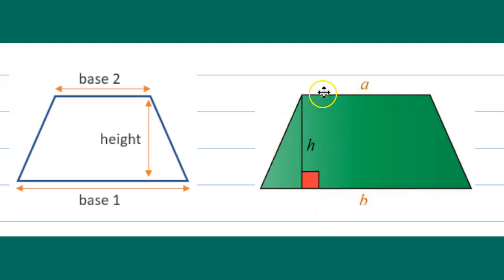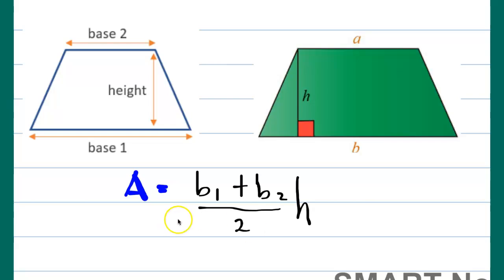So you could also say a and b and then the height. With that, we have the formula: base one plus base two divided by two times the height. So we're going to add the bases—the bases are those two parallel sides—and then we divide it by two and then multiply by the height. So like, for example, in this picture, a plus b divided by two times whatever the height is.